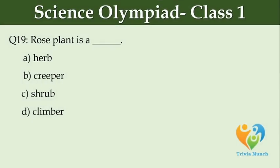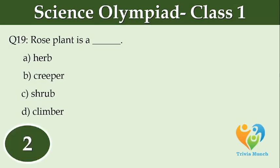Rose plant is a dash. Option A: Herb. Option B: Creeper. Option C: Shrub. Option D: Climber.